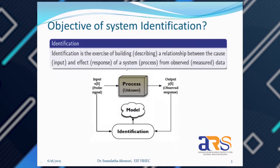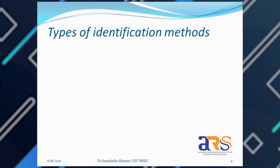The unknown process is disturbed by different types of disturbance signals. We prefer a step signal because it is easy to introduce into any system and we can get the step response. In this approach, we consider an input — called a probe signal — and observe the output response. Based on this input and output measured data, we try to predict or estimate a model.